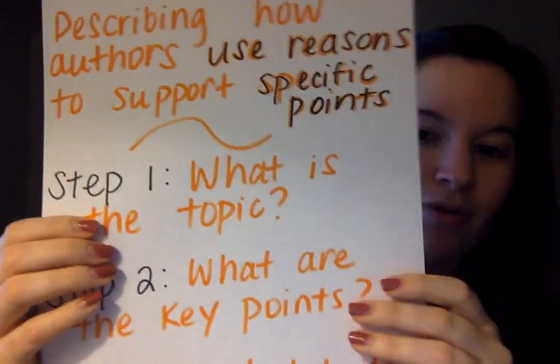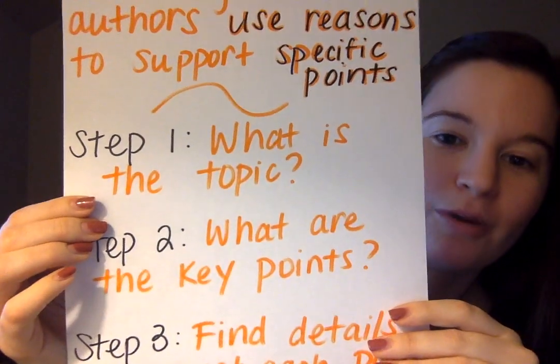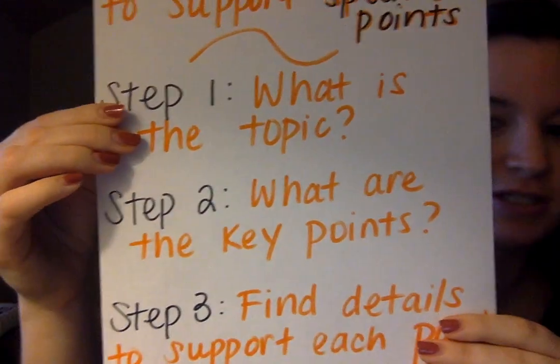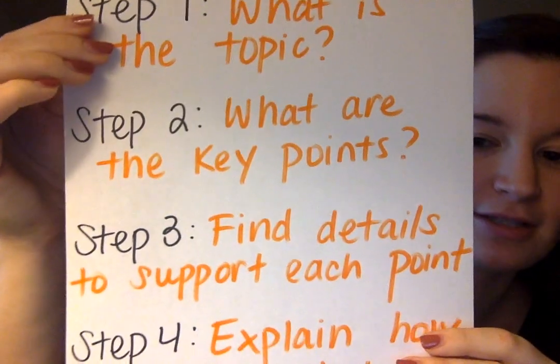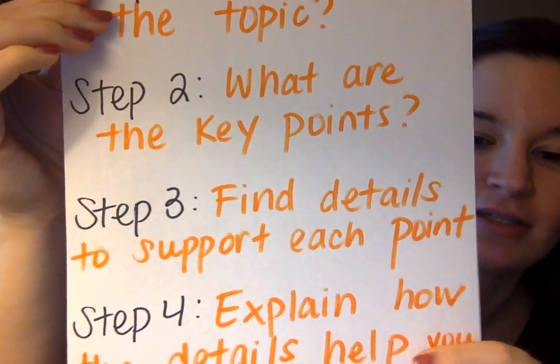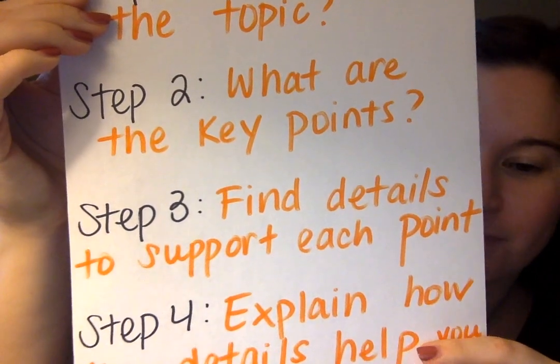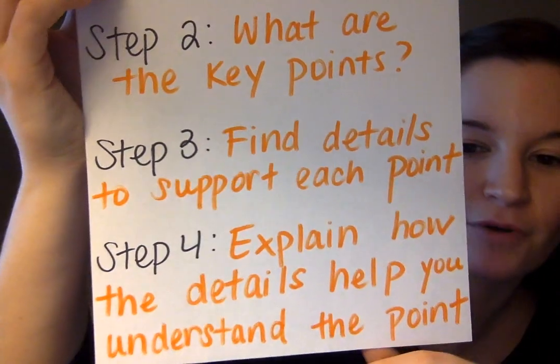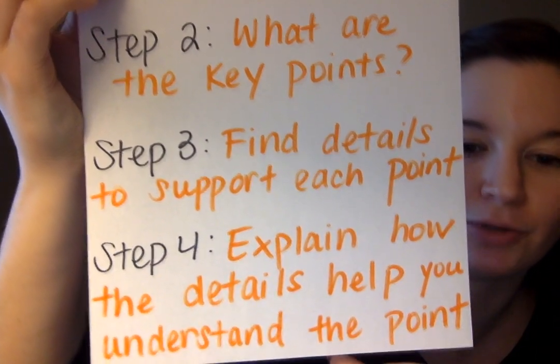To review, our steps are: step one, what is the topic? Step two, what are the key points? Step three, find details to support each point. Step four, explain how the details help you understand the point. The key point that we're going to be focusing on today is that white people wanted black and white people separate — they wanted segregation during this time period in the book.